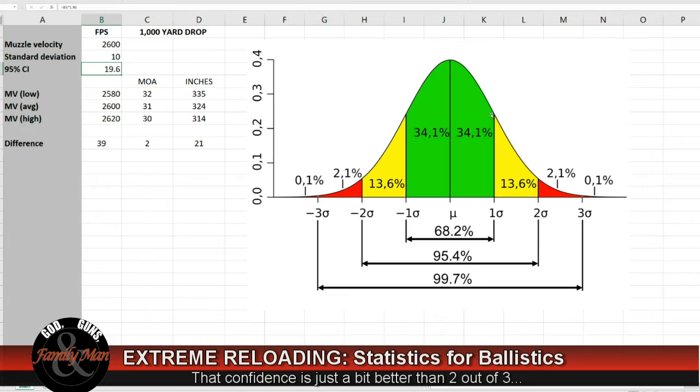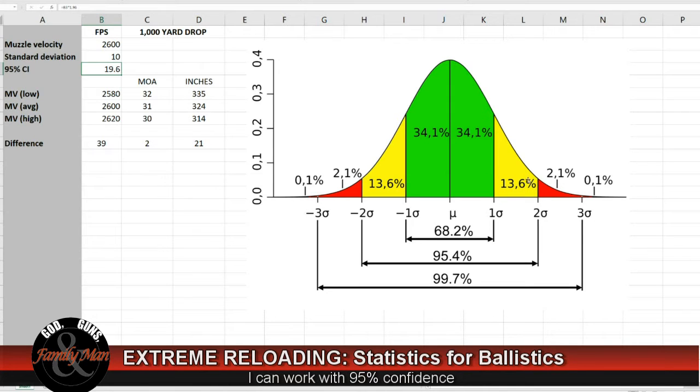68% may not give us enough confidence. However, if we apply 2 standard deviations, or really statistically 1.96 standard deviations, then we have a confidence that increases to 95%. In other words, 95% confidence interval that all of our rounds, or 95% of those rounds, will have a muzzle velocity somewhere in this area.